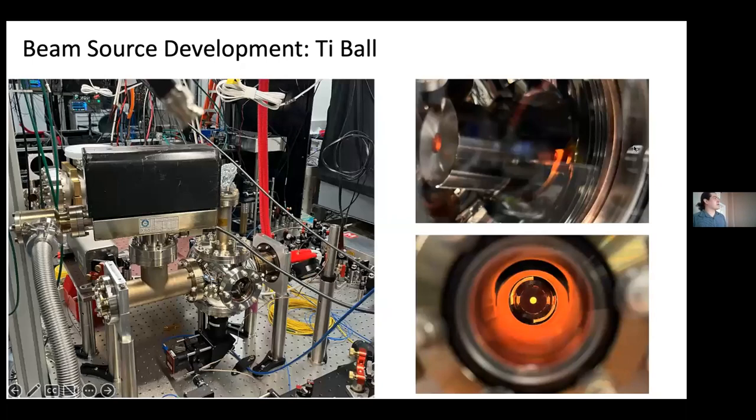So these are the electrical connections and you've got the tie ball kind of right in here. It's behind this aperture that prevents titanium from coating the viewports. So we have optical access, and this is kind of like a down the barrel look at the tie ball glowing. And you just ramp the current up. It gets really hot and starts sending gas phase titanium out of this aperture.